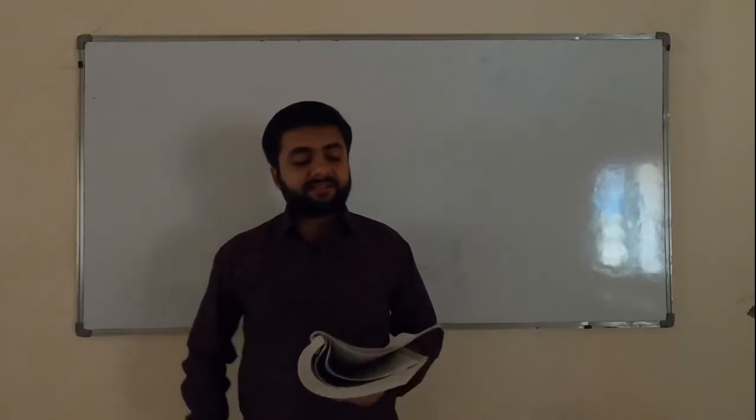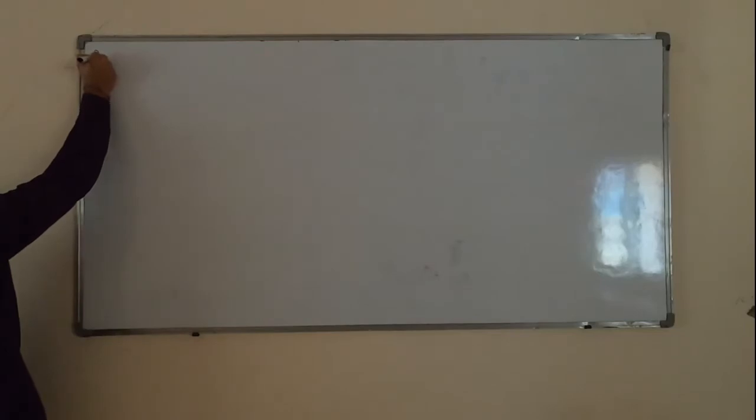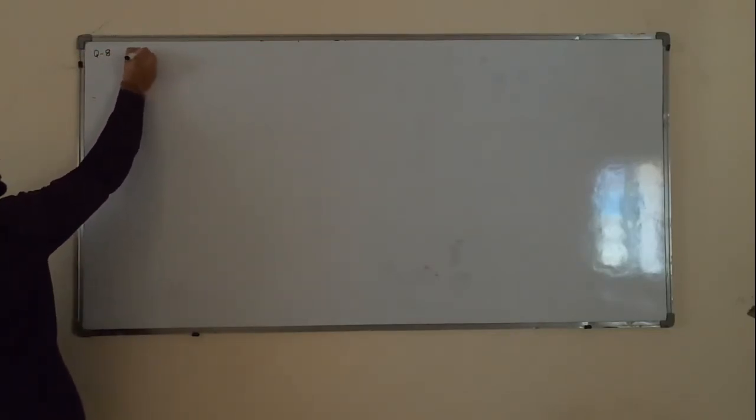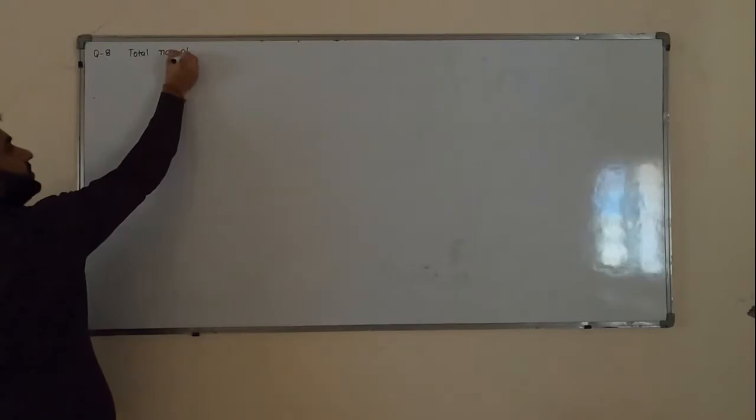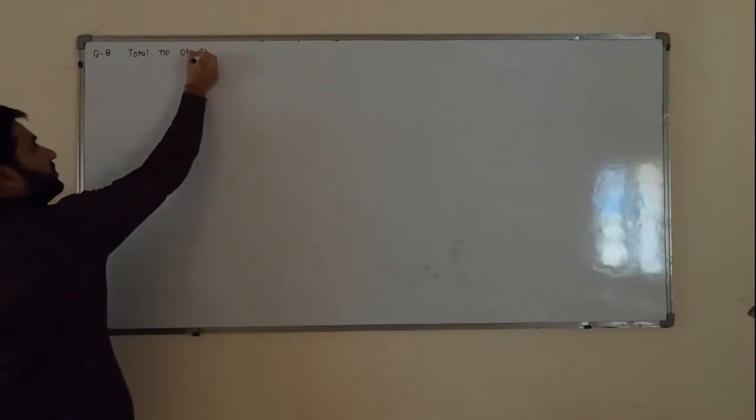Sum number 8: Five members of a family — husband, wife, and three children — are randomly arranged in a row for a family photograph. Find the probability that husband and wife are seated next to each other. Total number of arrangements for the family photograph: N = 5P5 = 5! = 120, because there are five members.